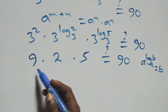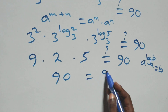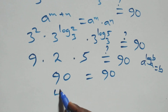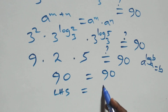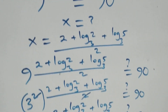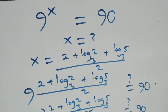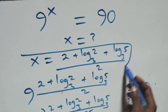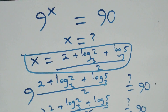The left hand side equals the right hand side, and therefore we conclude that x equals (2 + log₃2 + log₃5) / 2 satisfies the given problem. Thank you for watching — don't forget to subscribe for more videos, turn on the notification bell, share this video, give a thumbs up, and leave your comments. See you next class!